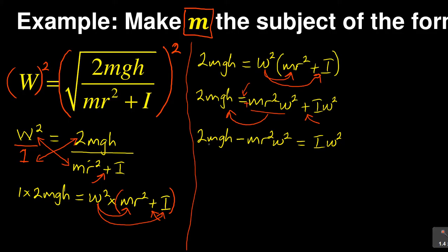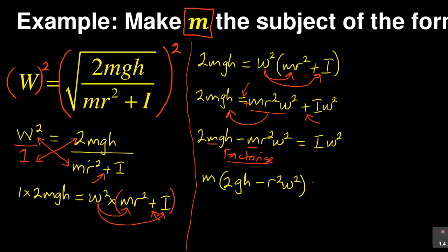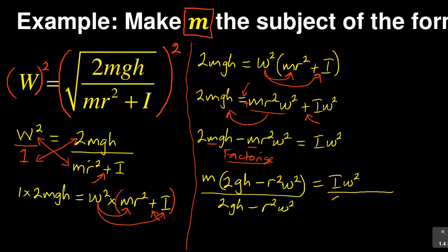Now you can see that m appears in two terms on the left-hand side, which is why we said factorization would be introduced. We are going to factor out m. When you take out m, you divide each term by m: 2mgh divided by m leaves 2gh, and mr²w² divided by m leaves r²w². So: m(2gh minus r²w²) equals Iw². Now divide both sides by (2gh minus r²w²).